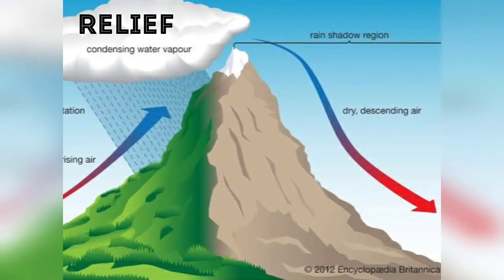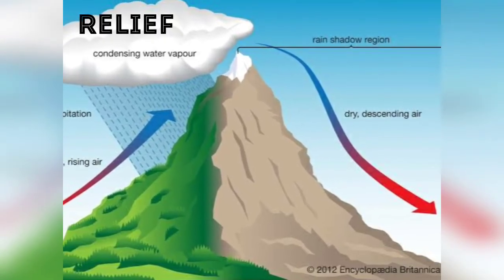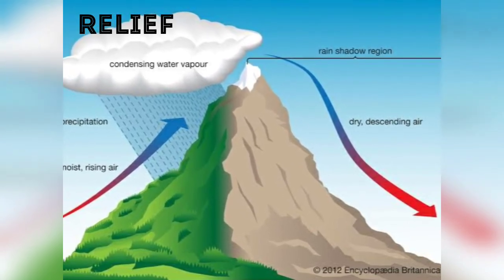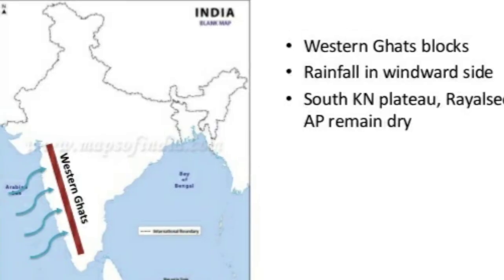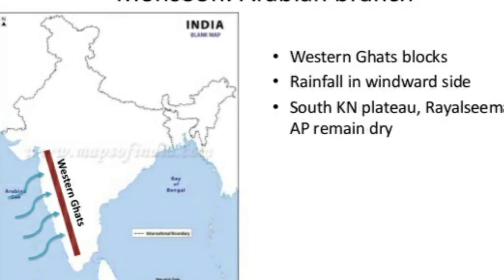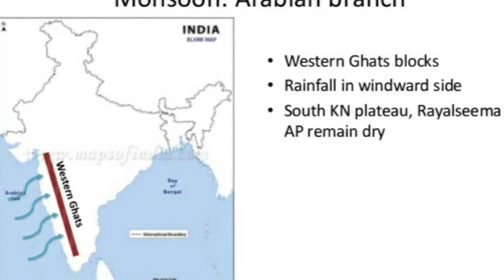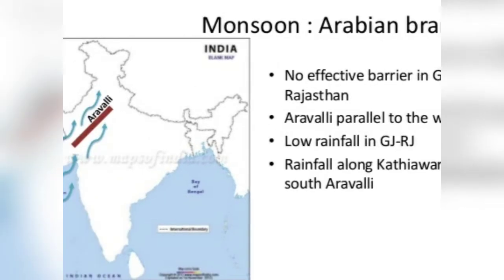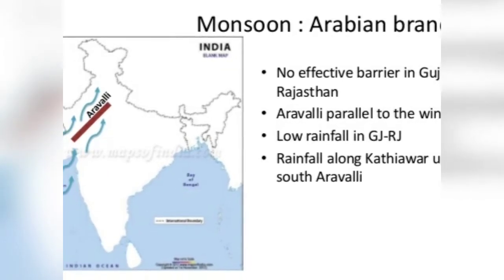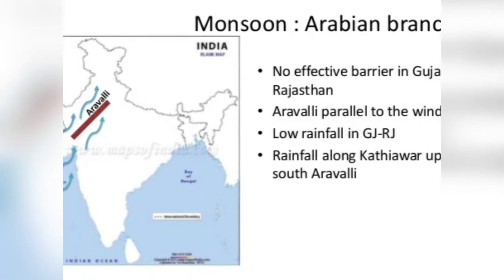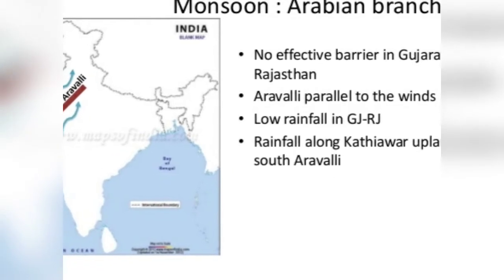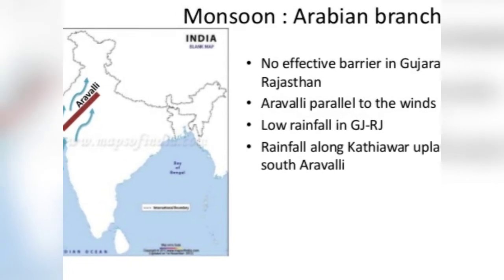Moving to relief: relief not only controls temperature but also determines rainfall, its pattern, and climate. The Western Ghats, for example, cause very heavy rainfall on their western slopes by checking the moisture-laden winds coming from the Arabian Sea. On the other hand, the Aravalli ranges run parallel to the Arabian Sea branch of the southwest monsoon and are not high enough to check these rains — which is the very reason why the Thar in Rajasthan is a desert.